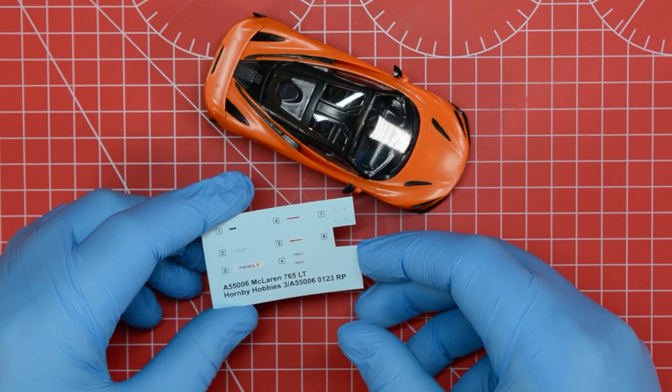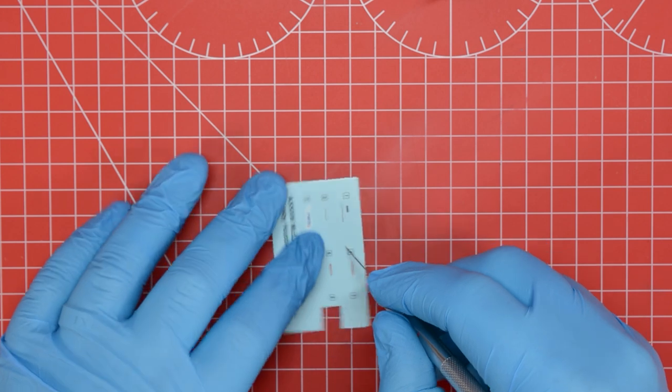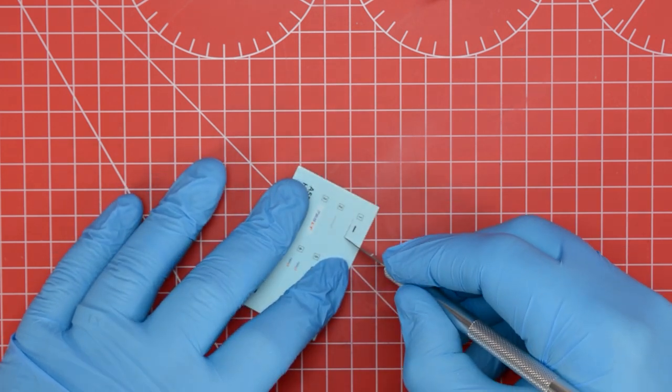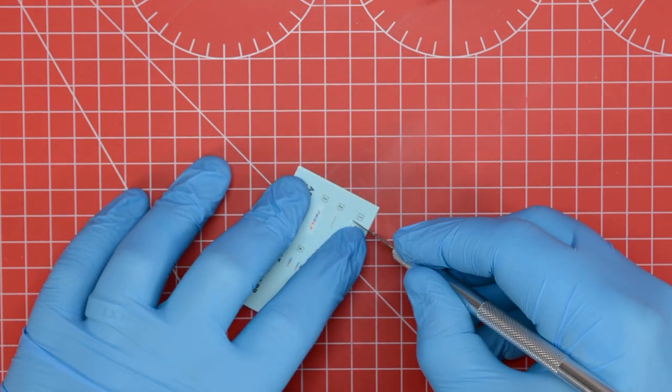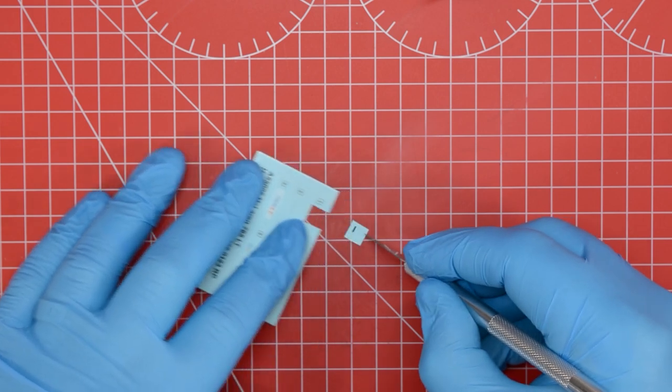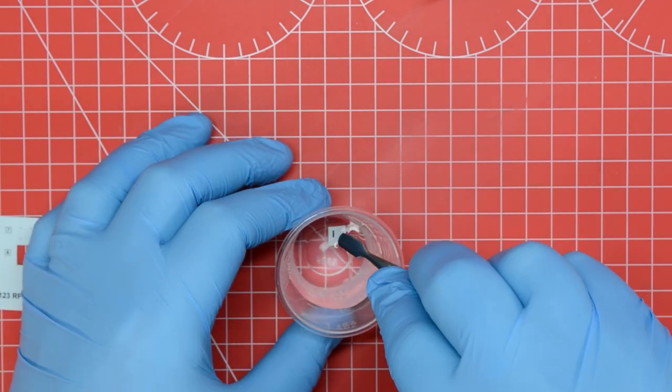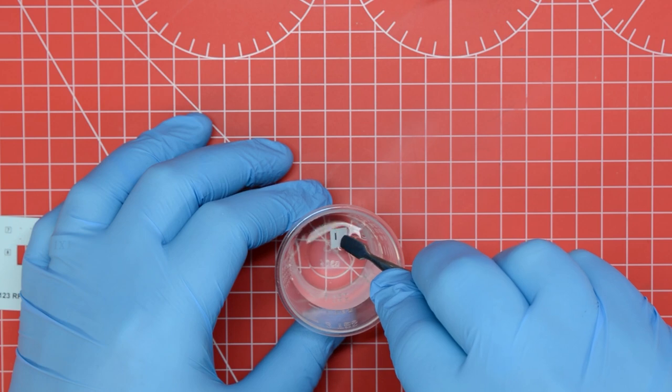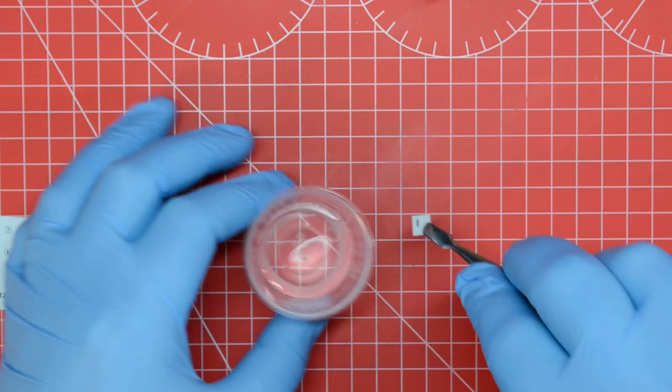Cutting each marking free from the sheet with the modelling knife first and then using the tweezers to dip this in ordinary tap water, after which we'll set it aside to soak for about a minute.